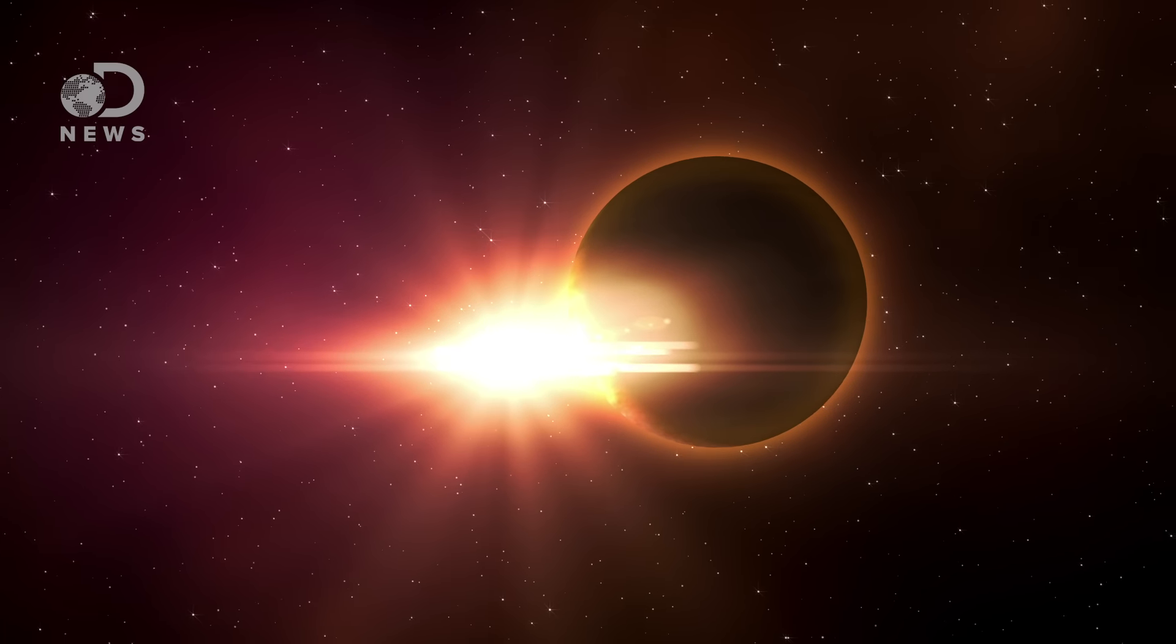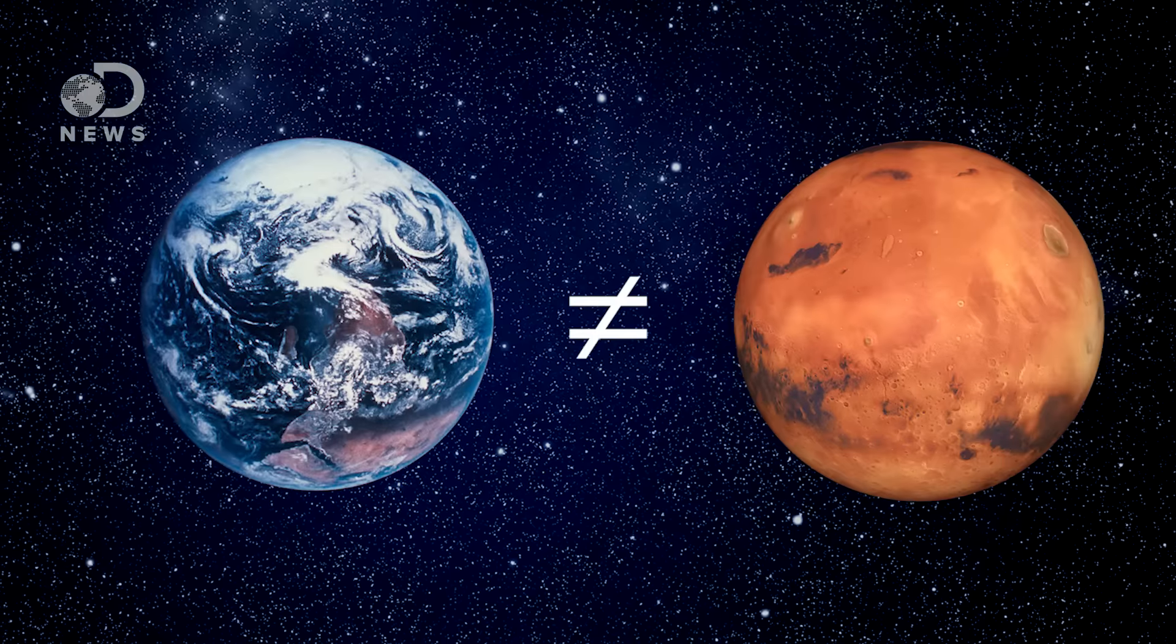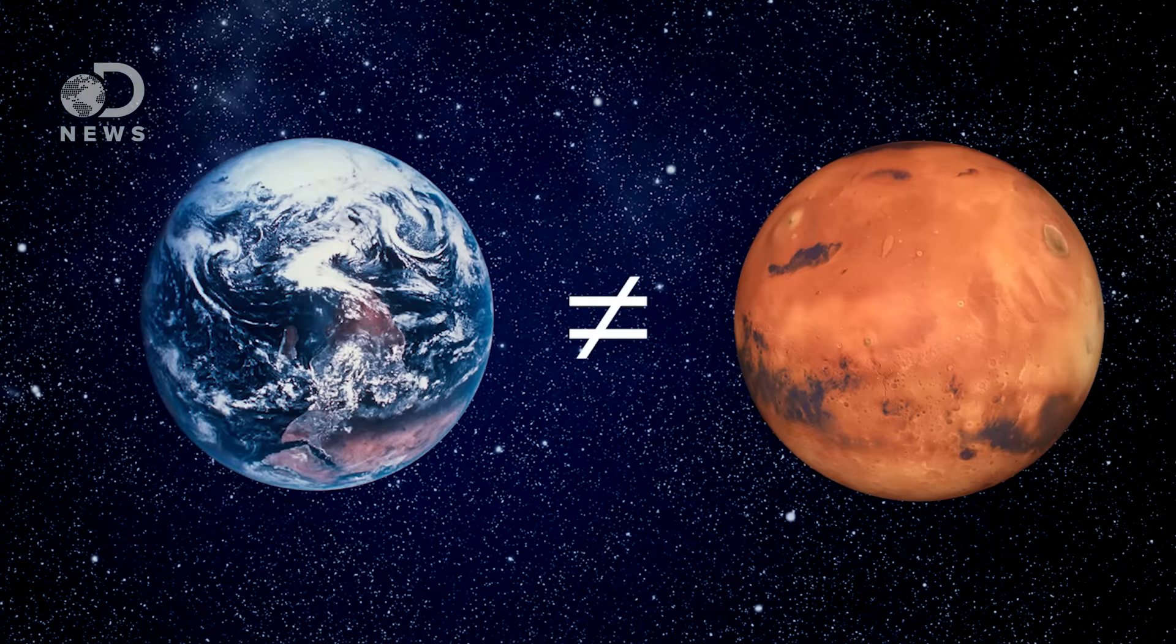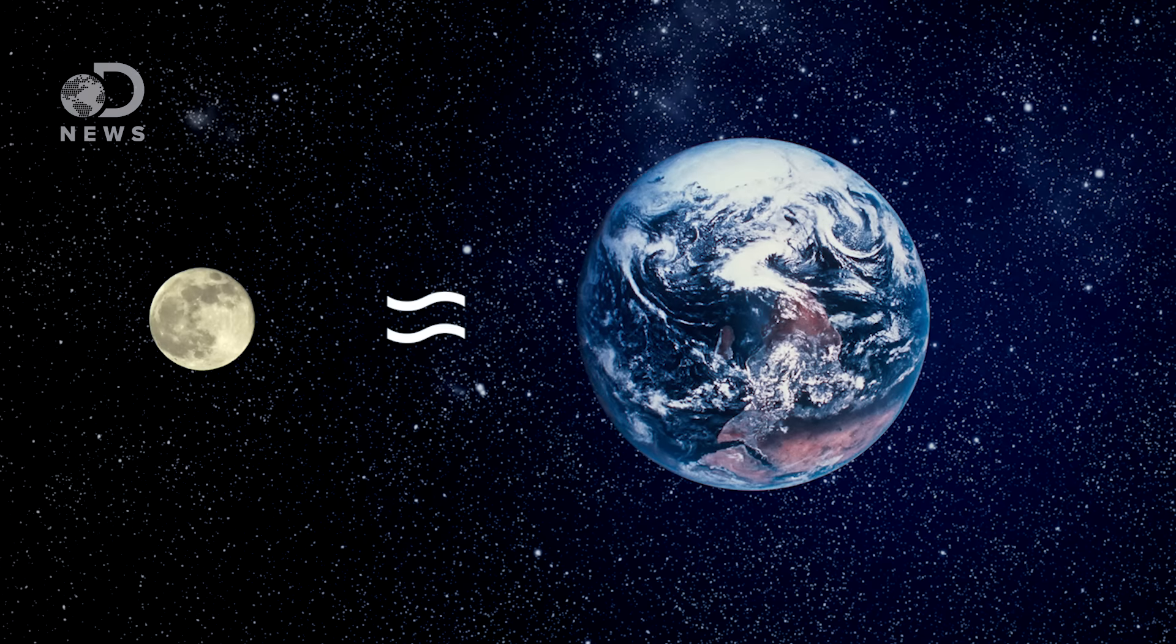We think that when the planets formed, their composition depended a lot on how far they were from the sun. The farther away they were, the more likely they were to retain heavier isotopes of elements. So Earth and Mars have different levels of certain isotopes, like silicon. But somehow, Earth and our moon have surprisingly similar levels of silicon, oxygen, and titanium.